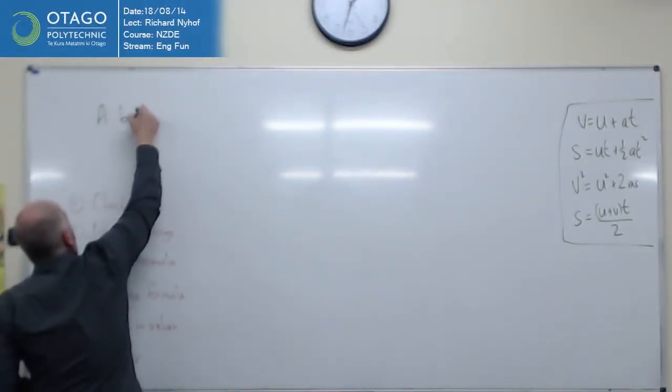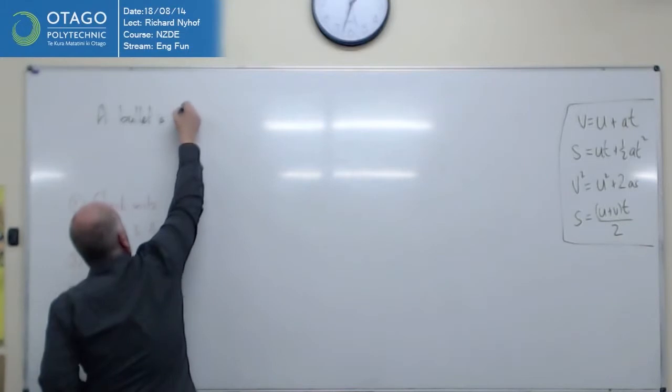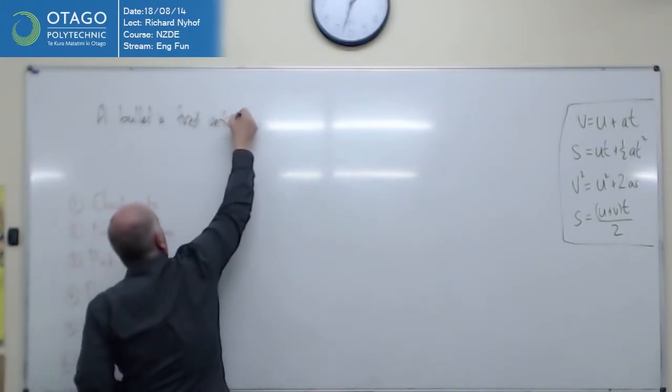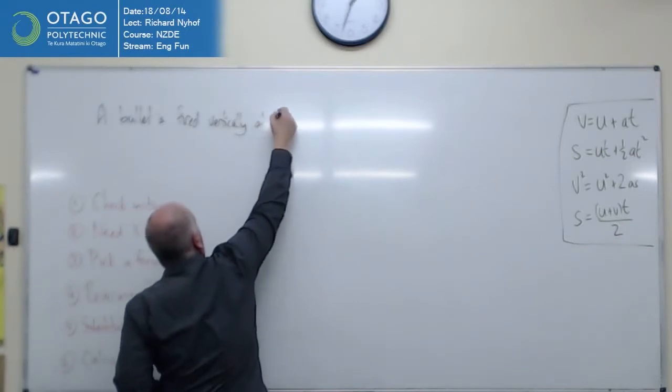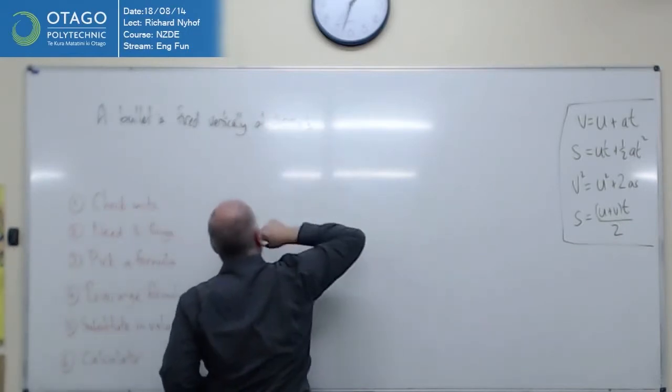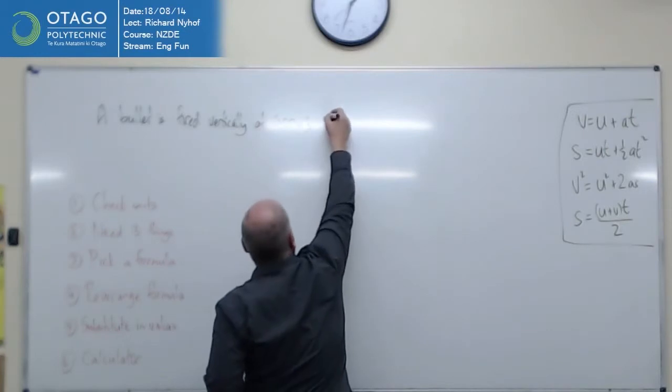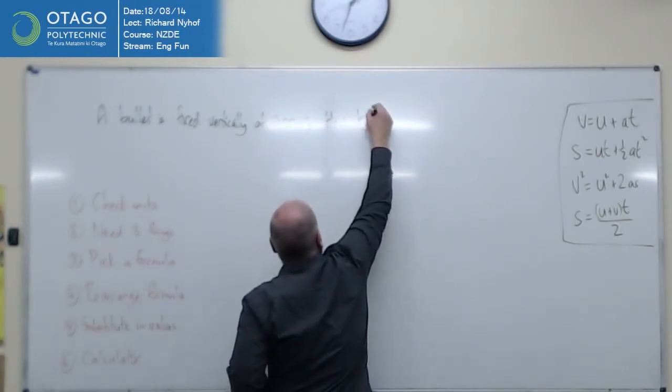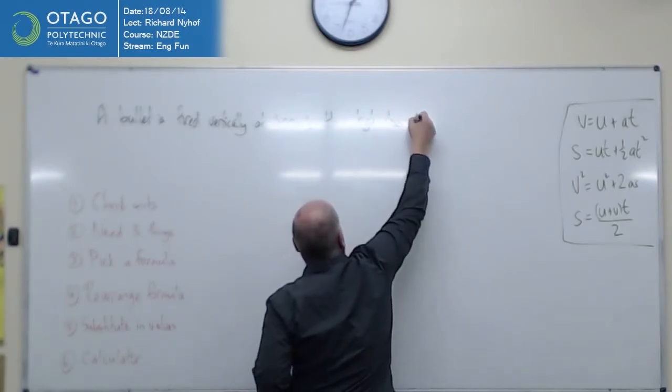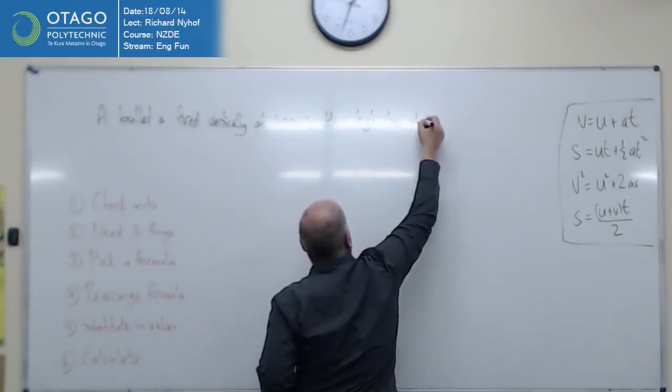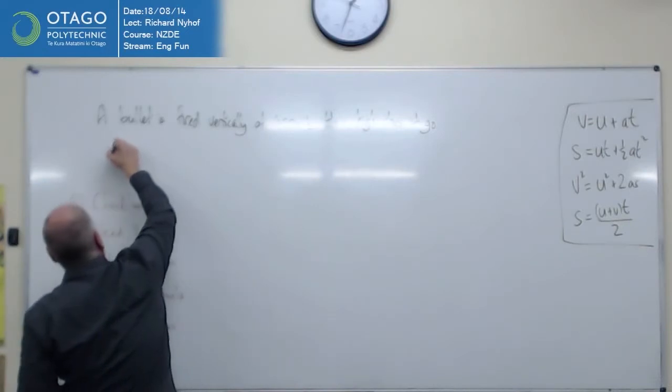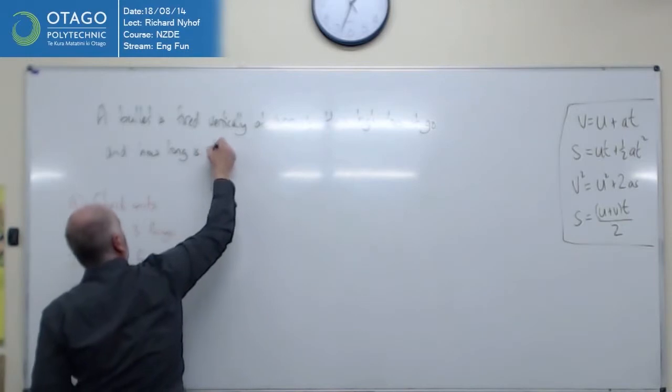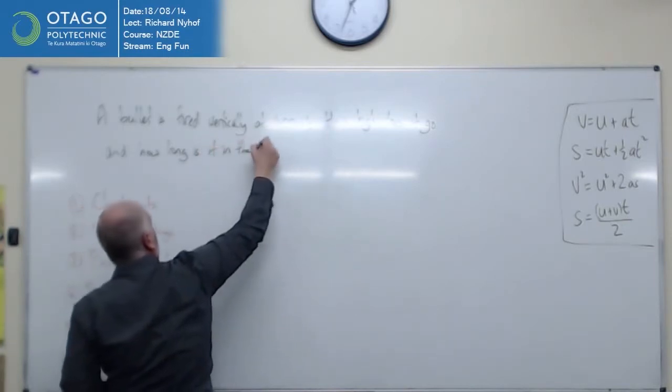A bullet is fired vertically at 400 meters per second. How high does it go? And how long is it in the air?